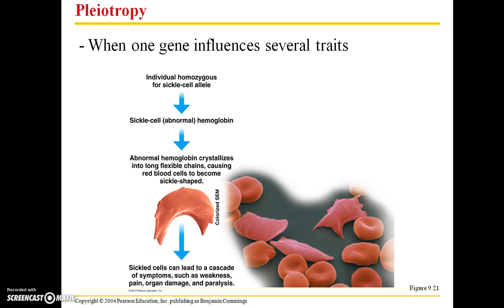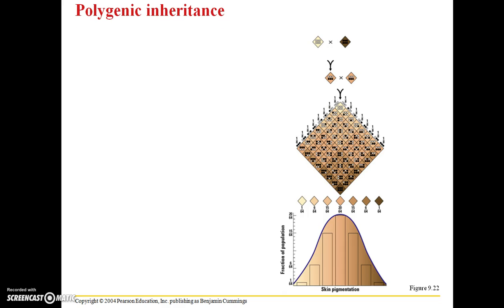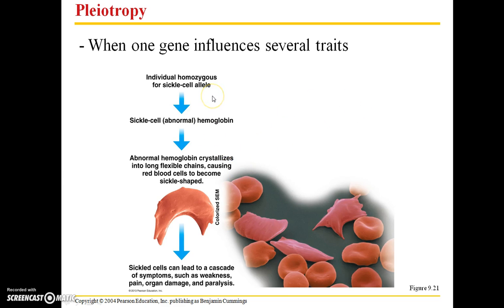Pleiotropy is when one gene influences several traits. For example, if you have an individual that's homozygous for the sickle cell allele, you are going to produce sickle cell hemoglobin, which is abnormally shaped. It's going to influence the functionality of your red blood cells. Basically, what this one single gene does is cause a cascade of effects — this is an example of pleiotropy.